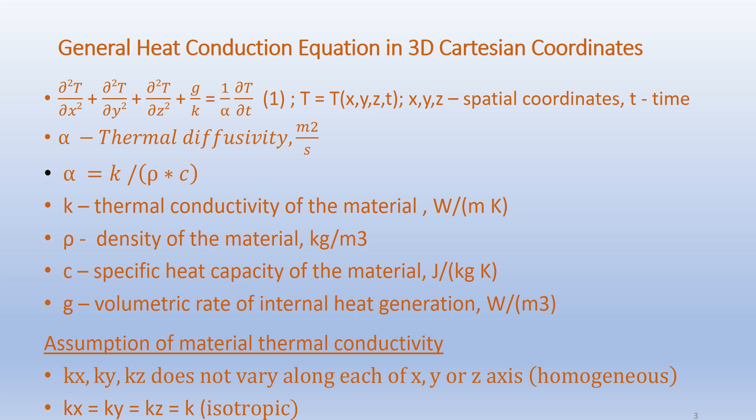Here T is a function of x, y, z and time. Alpha is the material property called thermal diffusivity, given in meter squared per second: α = K/(ρC), where K is the thermal conductivity in watts per meter Kelvin, ρ is the density in kilograms per meter cube, C is the specific heat capacity in joules per kilogram Kelvin, and G is the volumetric rate of internal heat generation in watts per meter cube.